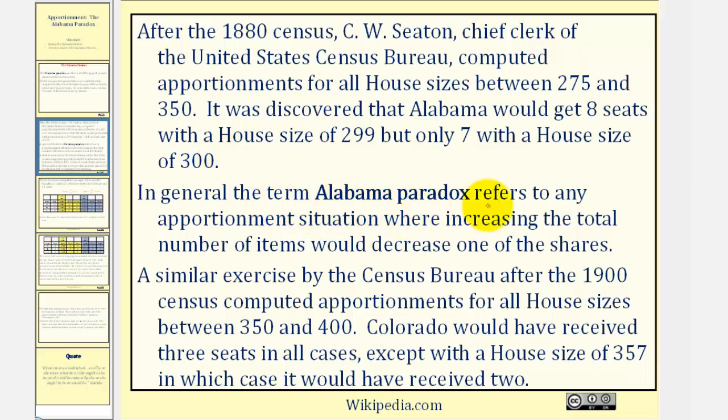In general, the term Alabama Paradox refers to any apportionment situation where increasing the total number of items would decrease one of the shares, as we see here, which happened to Alabama. Notice how when the house size increased by one, from 299 to 300, Alabama actually lost a seat. The number of seats went from eight to seven.